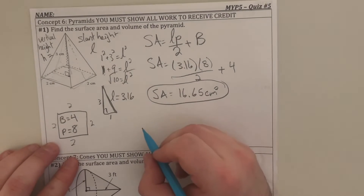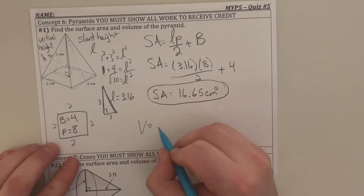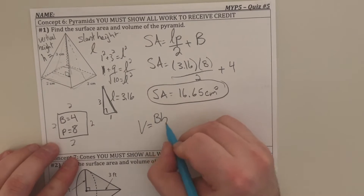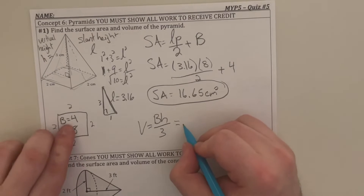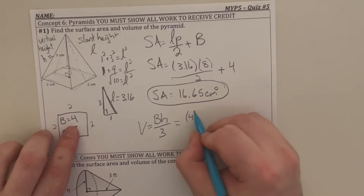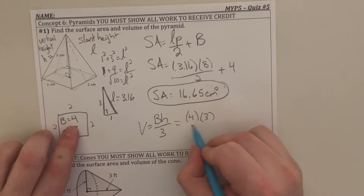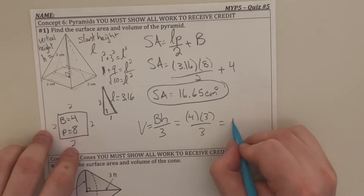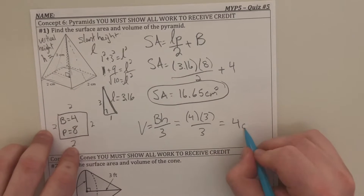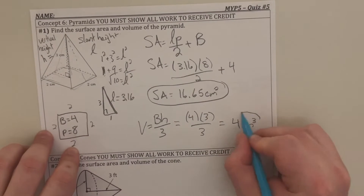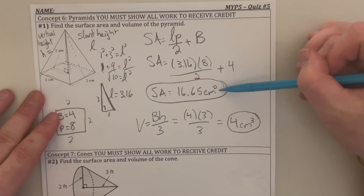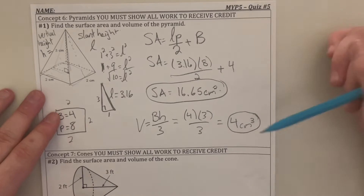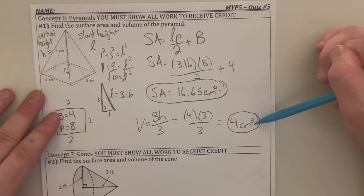For the volume, the formula is the area of the base times the height divided by three. Using my labels, I have four times three over three, which is just going to be four centimeters cubed. Make sure you have your labels: surface area is going to be second power, and volume is going to be third power.